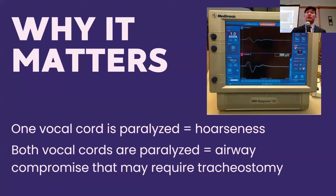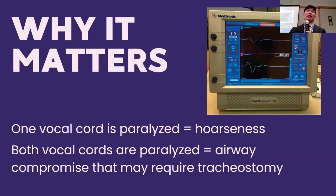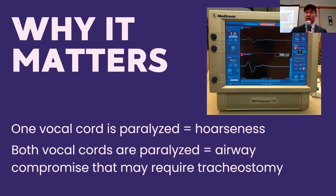The reason laryngoscopy matters so much is because it changes the risk of the operation quite a bit. When you go into surgery and one vocal cord is paralyzed, there's about a 5 to 7% risk of a temporary nerve injury on the other side. A temporary nerve injury means a hoarse voice that usually gets better on its own. But when both vocal cords are paralyzed, there's no opening to breathe through — that can lead to airway compromise and require a tracheostomy. So if one side is already paralyzed and you operate on the other with a 5% risk of temporary injury, the patient could have airway compromise. This is why knowing the vocal cord status before surgery, especially advanced surgery, is really important.